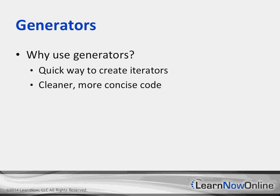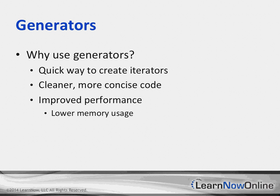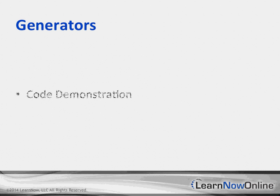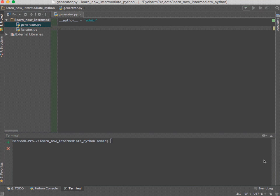Some of the main reasons to use generators: it's a very quick and efficient way of creating iterators, it's clean and concise code, and it has improved performance — not necessarily in execution time, but in lower memory usage. That's especially valuable for large inputs. It also allows the use of elements before they've all been generated, which comes in very handy on the metaprogramming side. Now let's jump into the code and see how generators can be utilized.